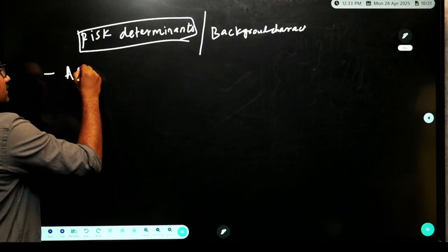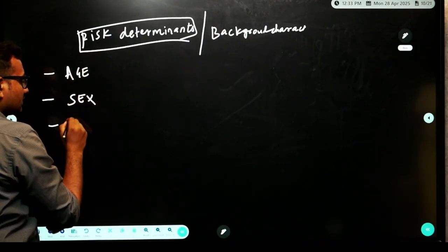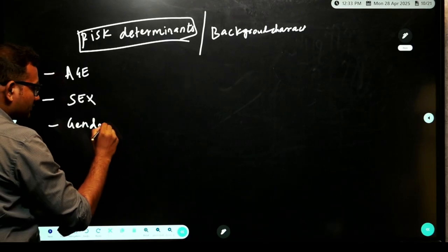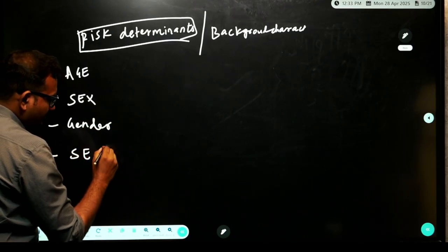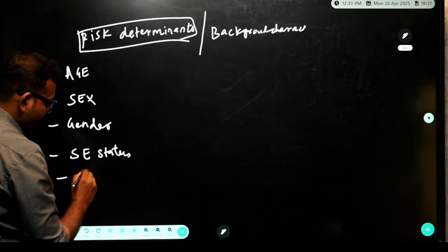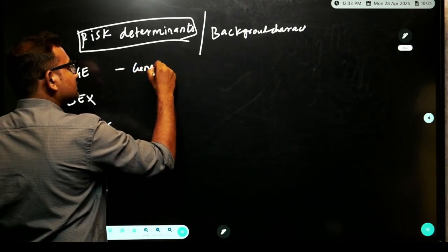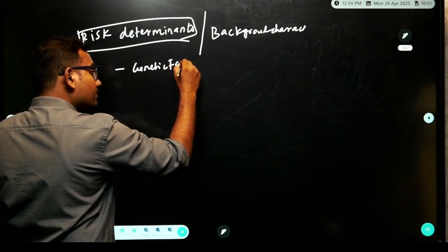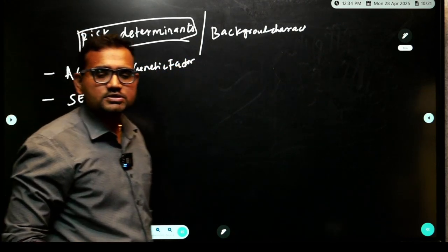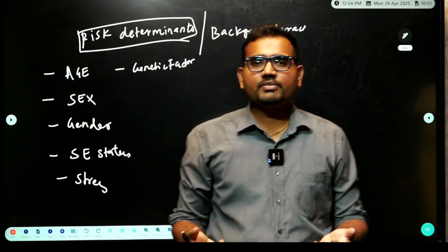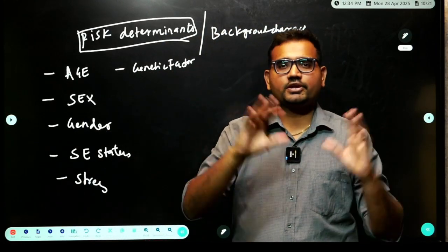Any factors which cannot be modified will come under risk determinants or background characteristics. Examples include age — can I modify my age? No. Sex, gender, sometimes socioeconomic status, sometimes stress, and genetic factors like interleukin-1 polymorphism seen in aggressive periodontitis. These are all predetermined factors. Nobody can modify them.